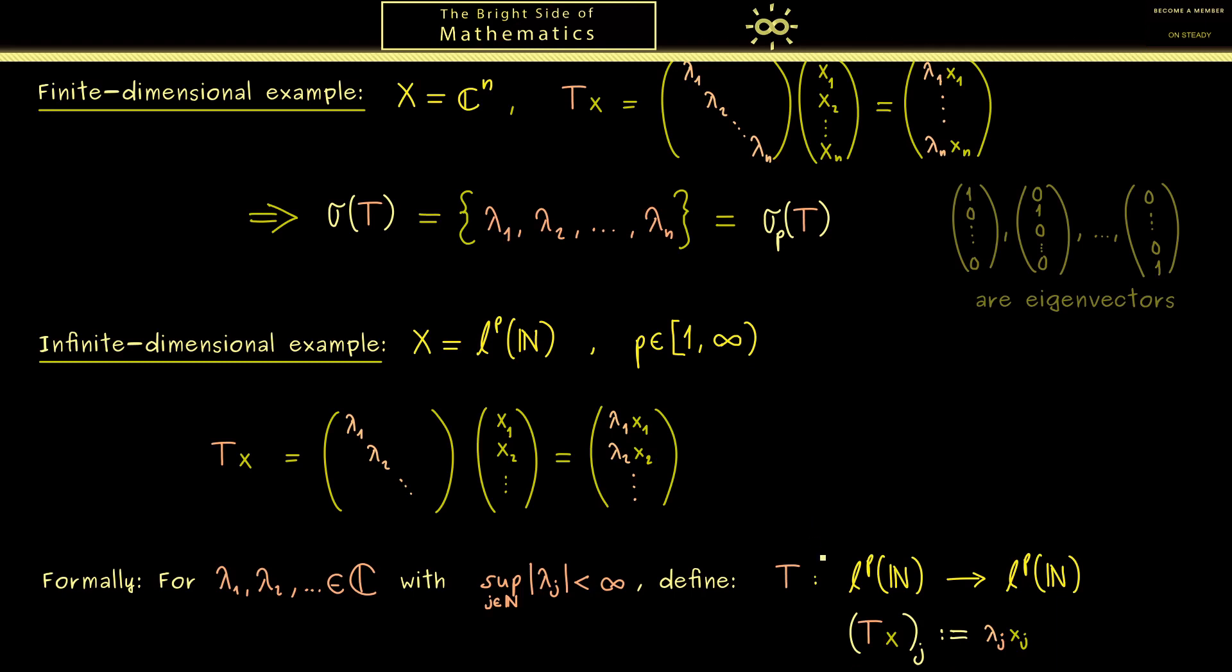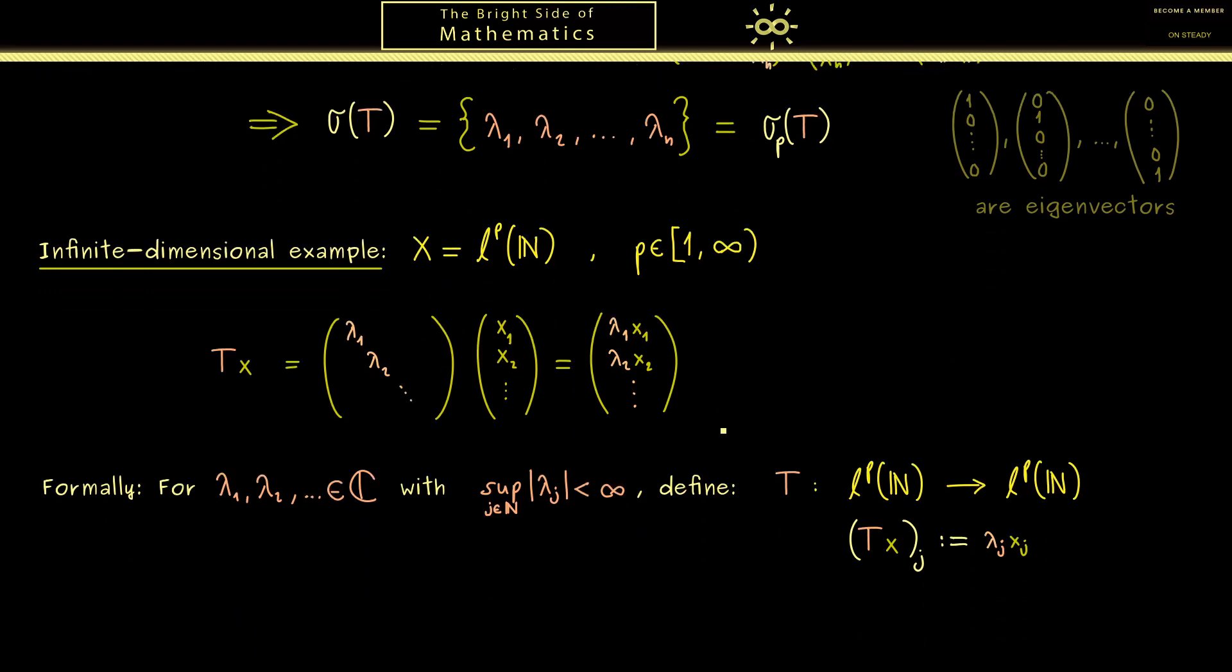At this point you should see what we did in the finite-dimensional example still works in this infinite-dimensional example. In particular we find simple eigenvectors such that all these values are eigenvalues. So let's immediately write that down.